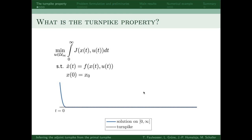So, what is the turnpike property? To answer this, let's consider an optimal control problem like this one, where the goal is to minimize a given cost function of the state x and control u, such that the state has some dynamics. You can consider this more of an illustration.